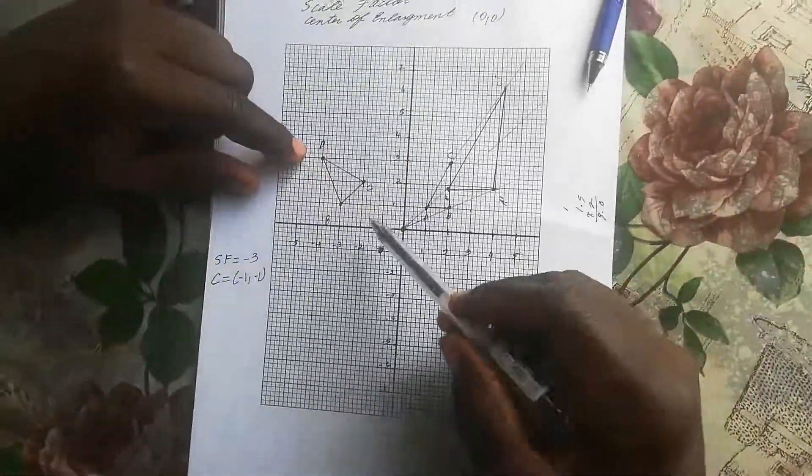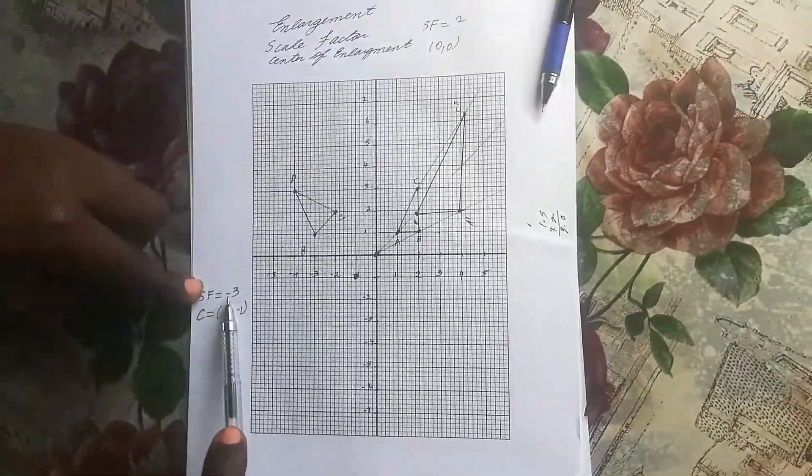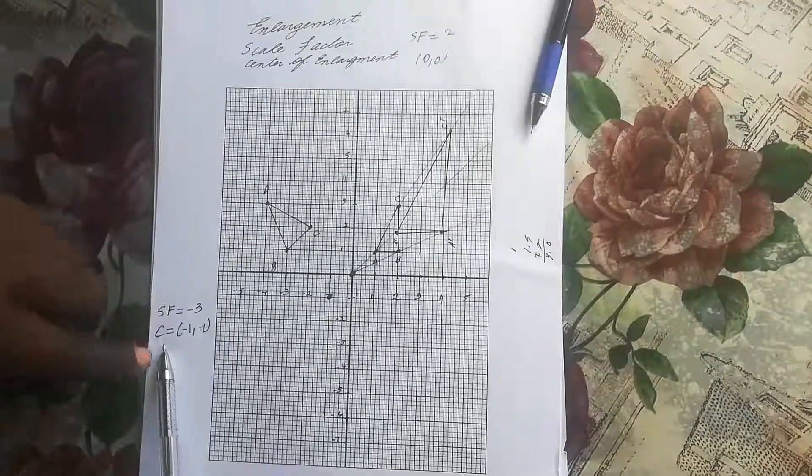We have a triangle BCD and we're going to enlarge it by a negative scale factor of -3 with our center at (-1, -1). Here's our center.